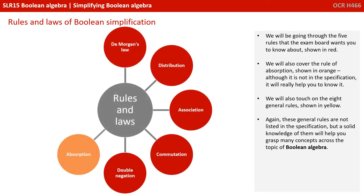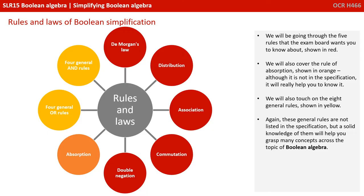We will be going over the five rules that the exam board wants you to know about specifically, shown in red. We will also cover the rule of absorption, shown in orange. Although not in the spec, it will really help you to understand it. We'll also touch on the eight general rules, shown in yellow. These general rules are not listed in the specification technically, but a solid knowledge of them will help you massively grasp many of the concepts across the topic of Boolean algebra.